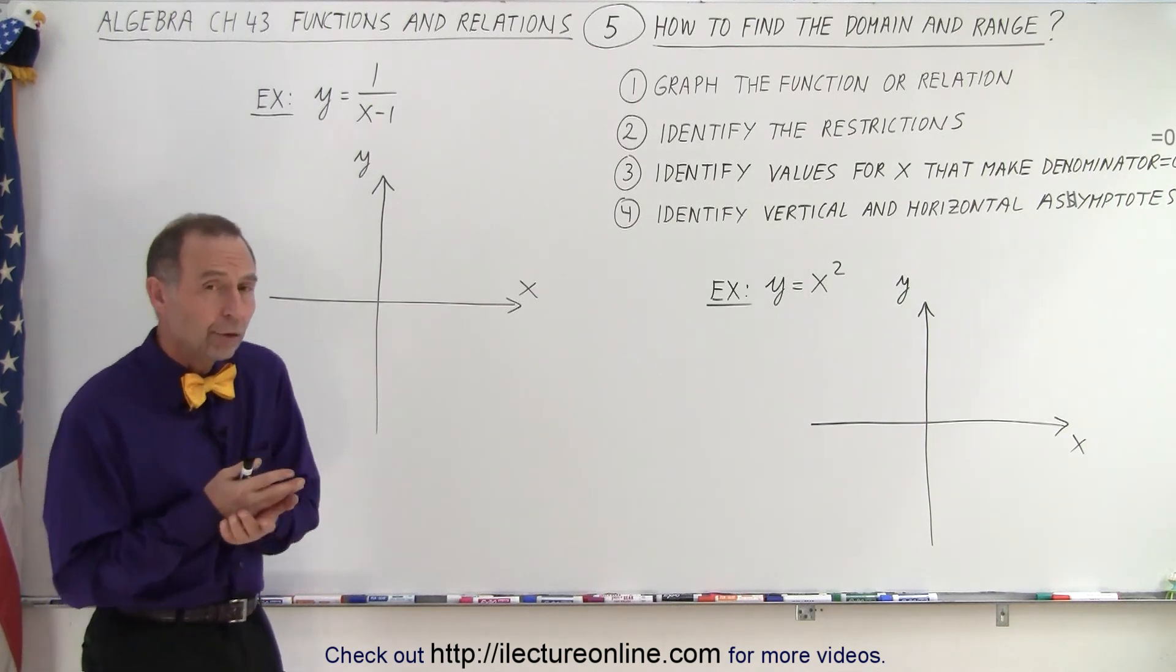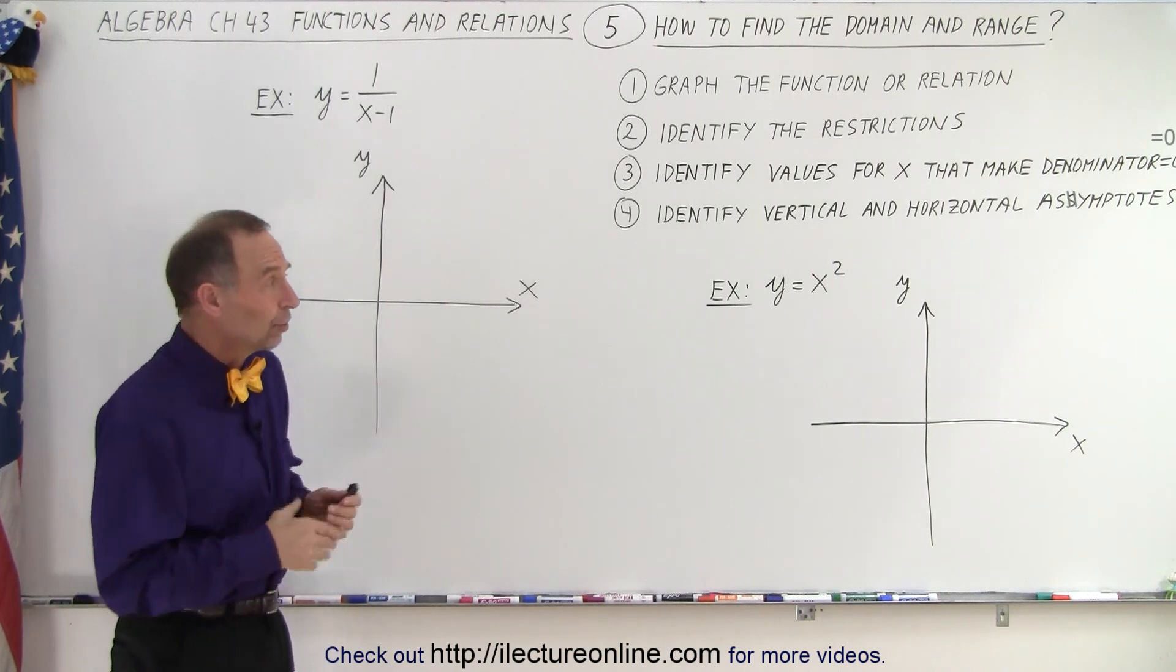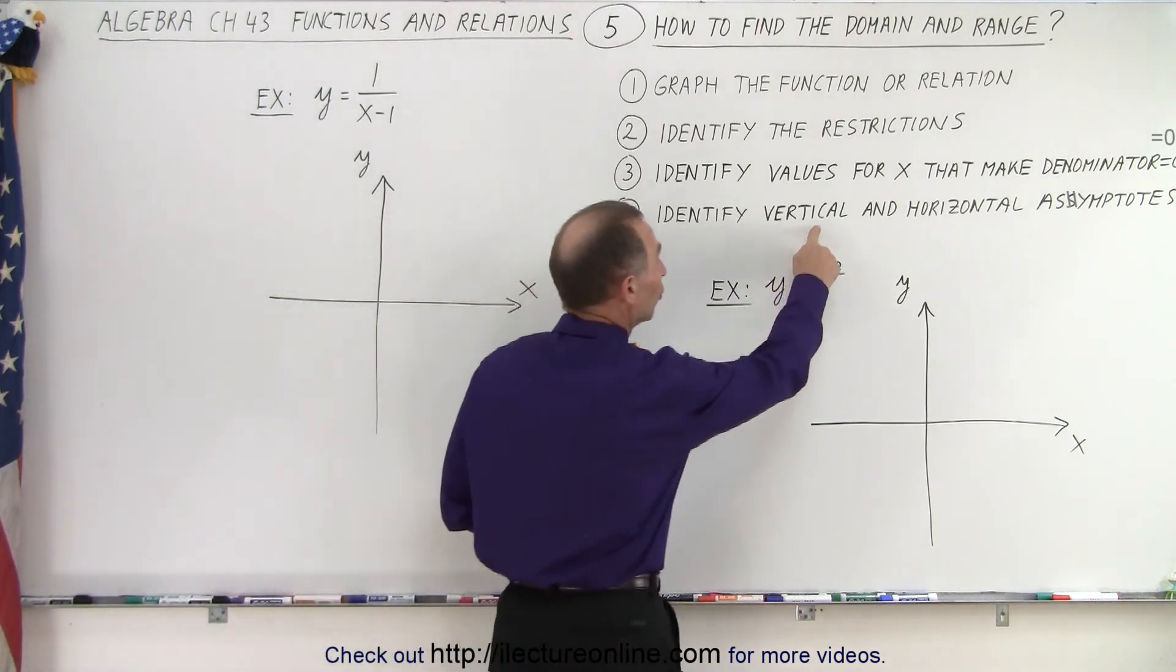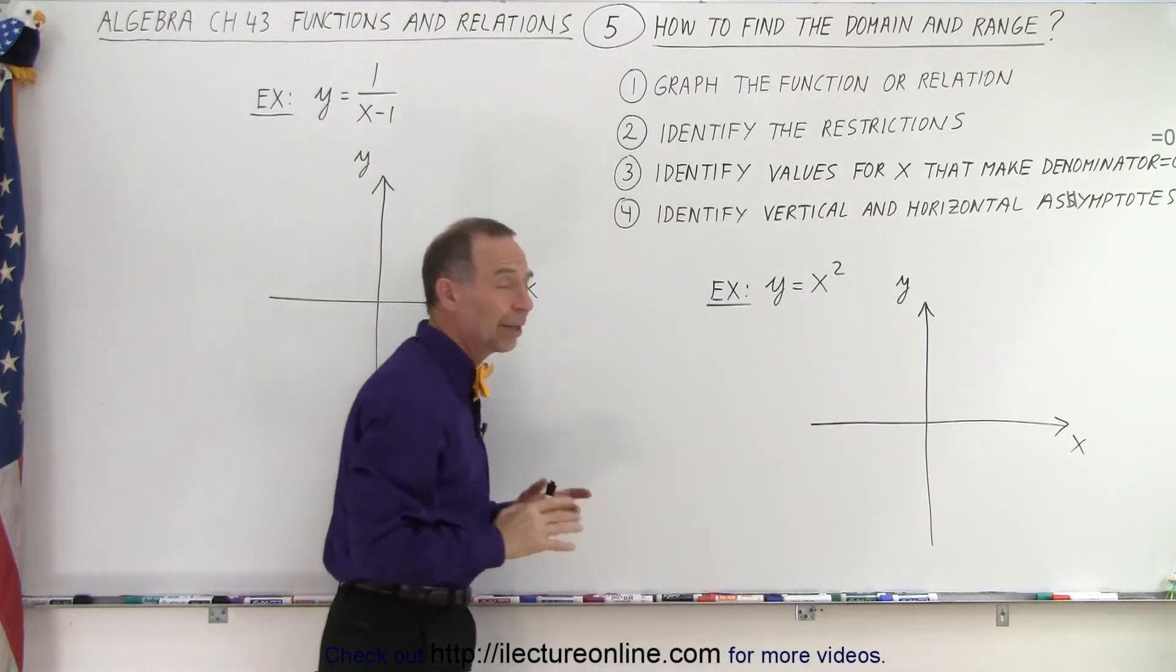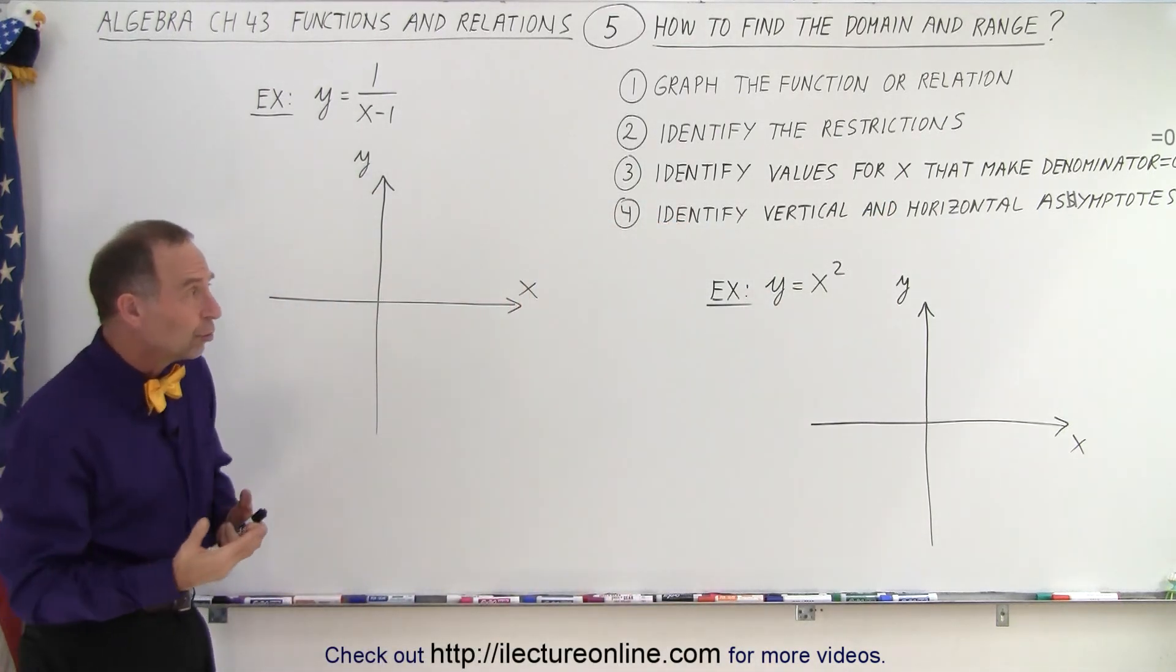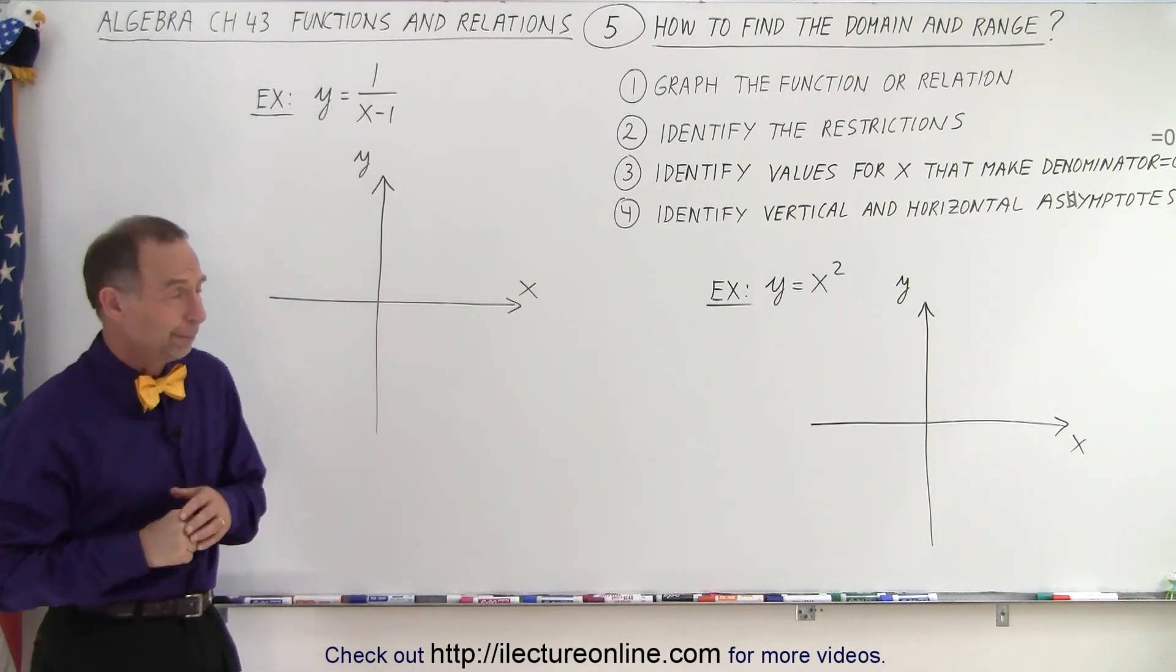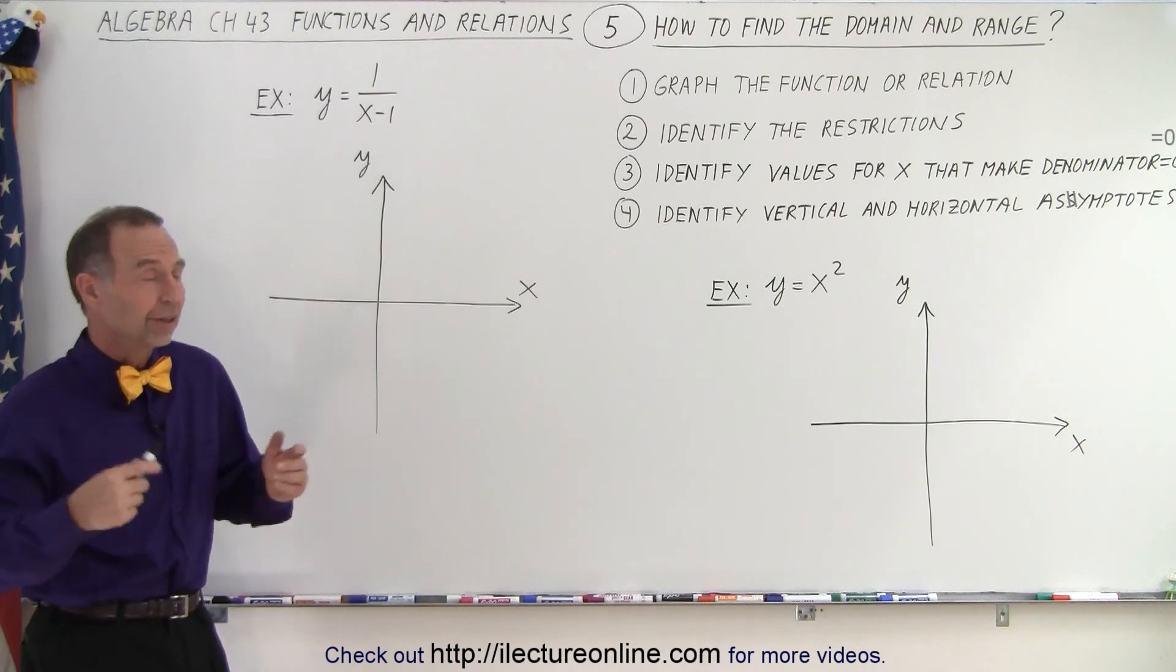And then also look for and identify the vertical and the horizontal asymptotes. Now, it turns out that the vertical asymptotes are usually associated with values of x that make the denominator zero. But then you also have the horizontal asymptotes that give you specific restrictions on the value for y as well. Let's try a couple of simple examples.